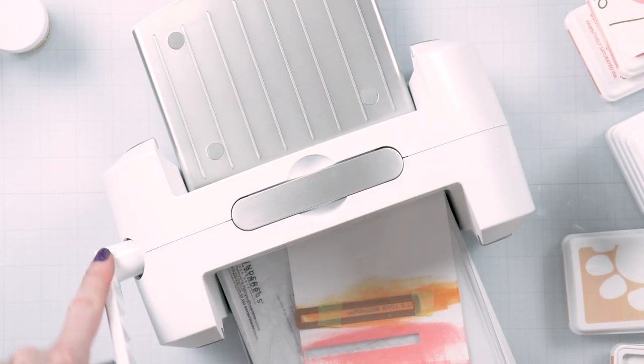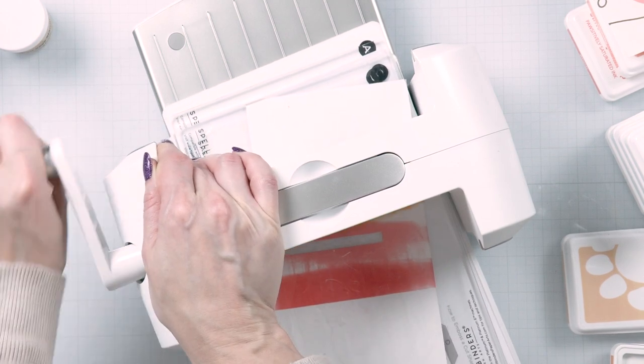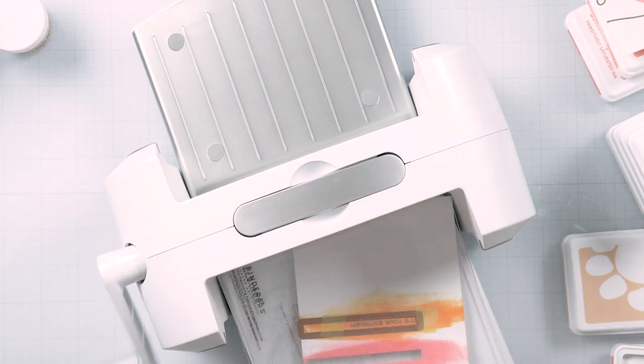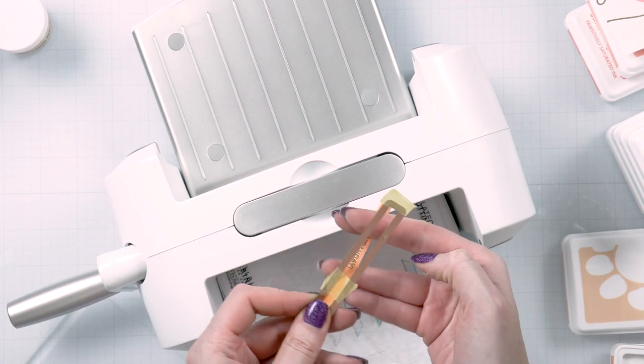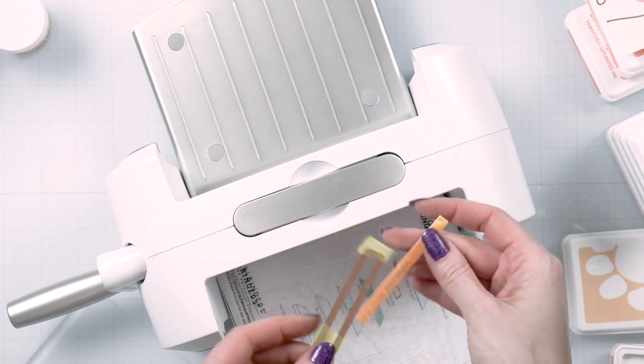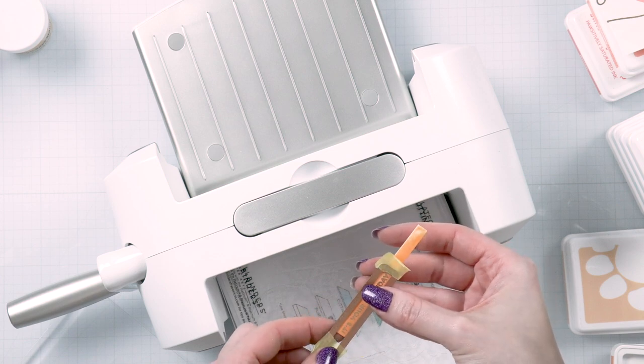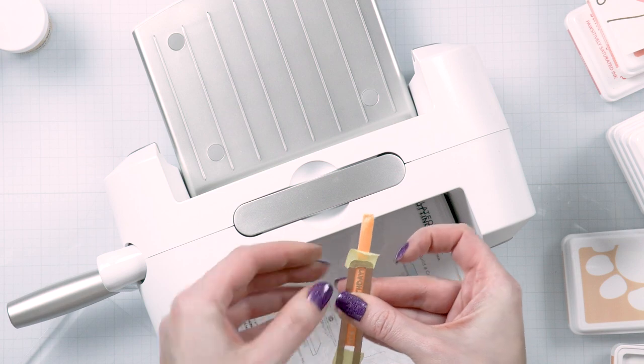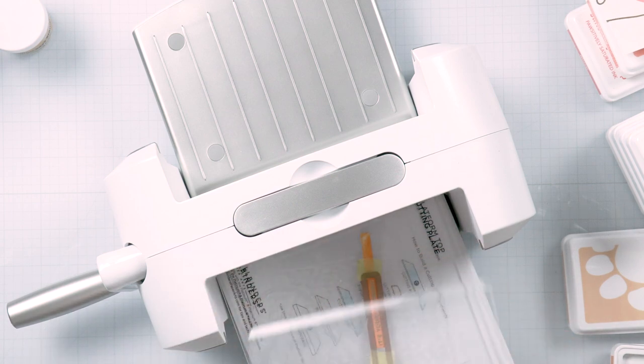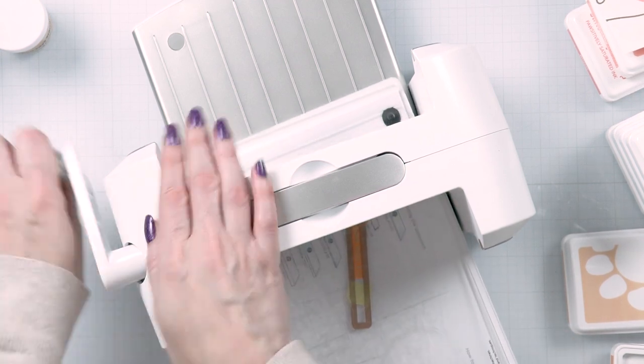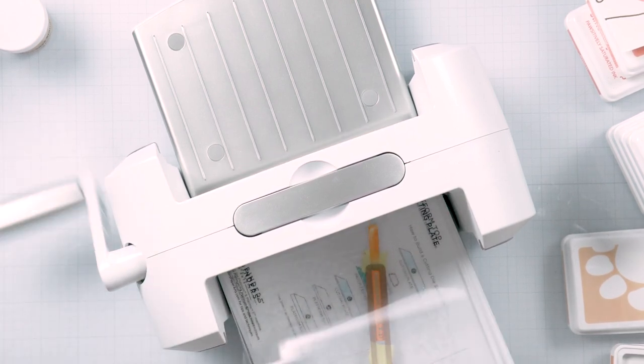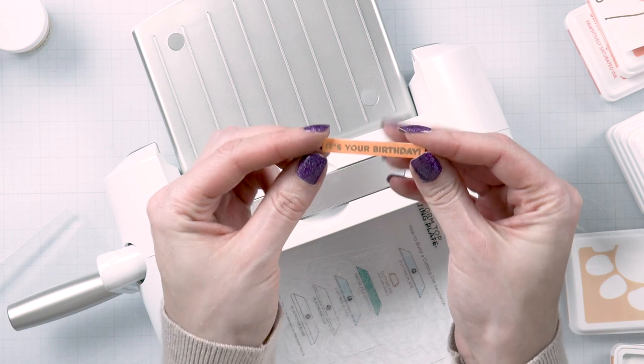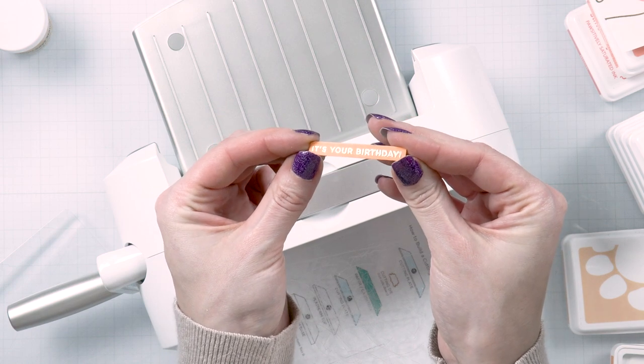Next I used a banner die from my stash and I cut it out in my Spellbinders Platinum 6 die cutting and embossing machine. Now this is the only die cutting that I did for these cards. Everything else is stamped. There's no more die cutting involved. By the way, the balloon stamp set has coordinating dies. If you want to create die cut balloons or something like that, you can pick the coordinating dies up in the Simon Says Stamp Store. There's even a die to cut the balloon string.